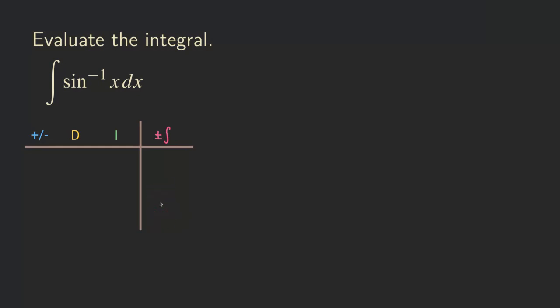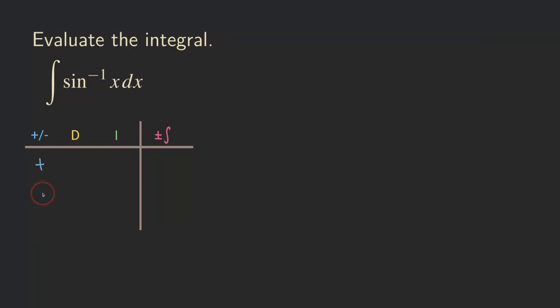And then you can just focus on integrating this function. So let's get started and I will show you what's going on. We are going to start by writing the plus sign right here. The reason for putting the plus sign is because there is no minus sign, and then the signs will be alternating as we move down this column.